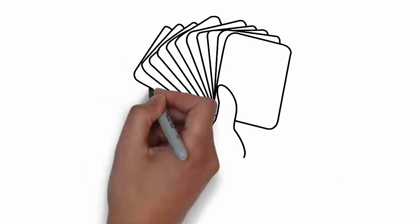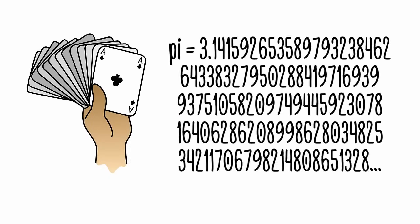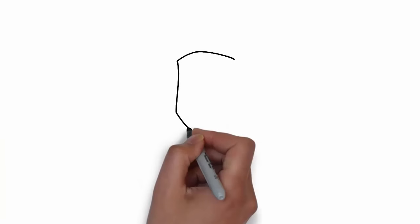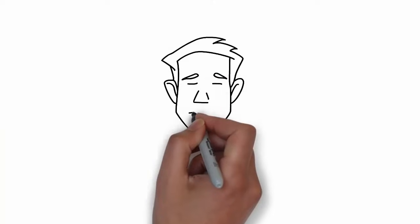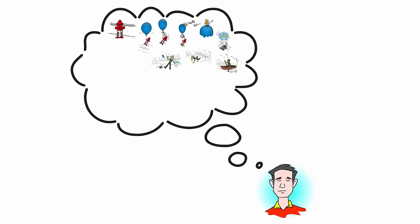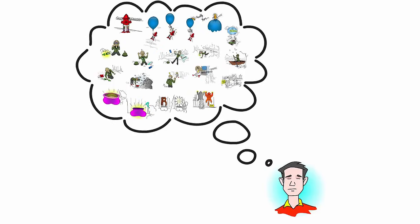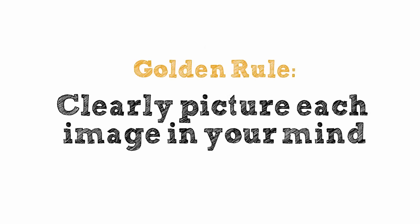When a memory expert memorizes playing cards or the first thousand decimals of pi, they use mental imagery techniques. In this series of videos, you are going to memorize the first 20 elements of the periodic table by doing what the experts do. I'll tell you exactly what to picture in your mind and I'll even draw it for you too. Focus on seeing each picture in your head and you'll be amazed at how easily you can recall everything.